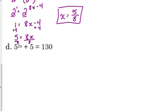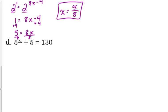D is just a little bit different in that to solve this one, before we try and get the same bases, we've got to get that exponential expression by itself. This has got to be on the side by itself. So we've got to move that 5 first by subtracting. 130 minus 5 is 125.